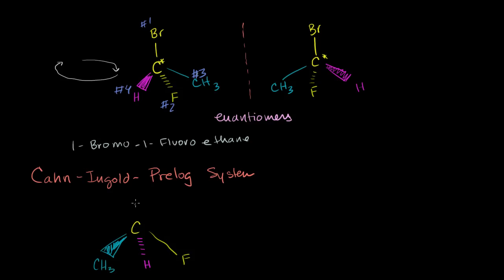The bromine is still going to be on top. Once you've put the smallest atomic number molecule in the back, then you want to look at the rankings of one through three. We have four molecules here, so we look at the largest, which is bromine — number one. Then number two is fluorine. And then number three is this methyl group, the carbon that's bonded to this carbon. So it's number three. And in the Cahn-Ingold-Prelog system, we think about what would it take to go from number one to number two to number three. In this case, we would go in the clockwise direction.